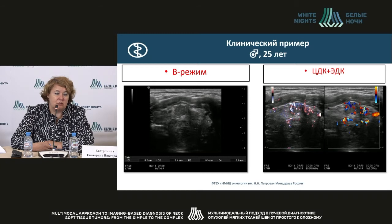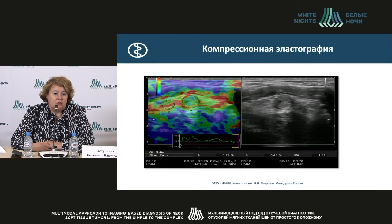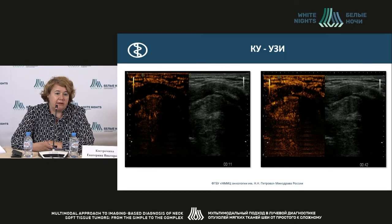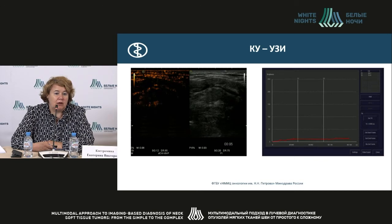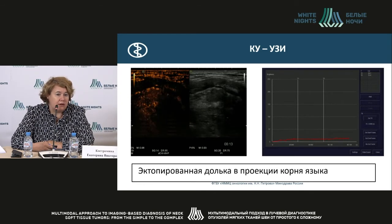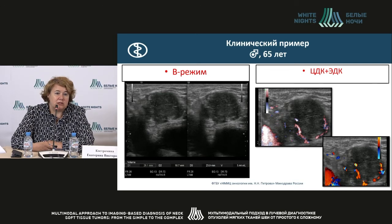One more case — using contrast when searching for ectopic lobes of thyroid. A young woman aged 25 who had taken hormones for a long time, then stopped and complained about a visualized node at the root of her tongue. Two isochoic nodes with rather high blood flow are seen. Elastography showed low signs — second elastotype with rigidity ratio of 1.8. With contrast, homogeneous filling in both venous and arterial phase with a low contrasting curve. This was an ectopic thyroid lobe at the tongue root.